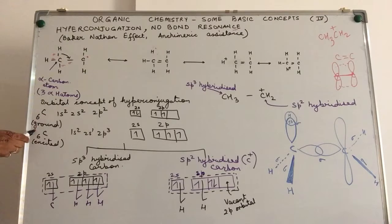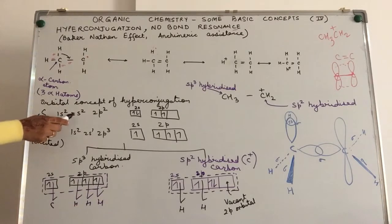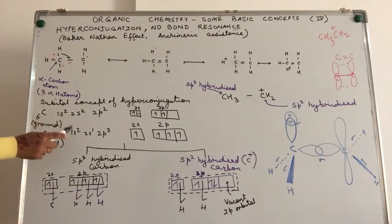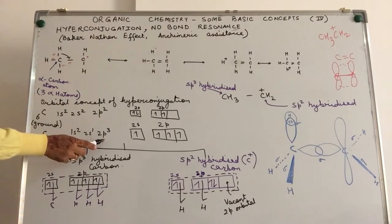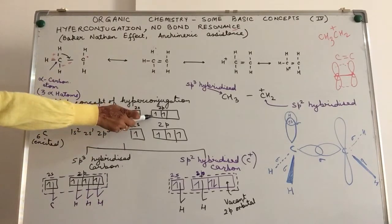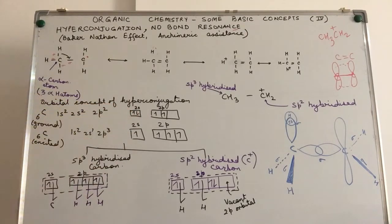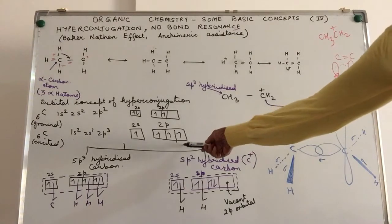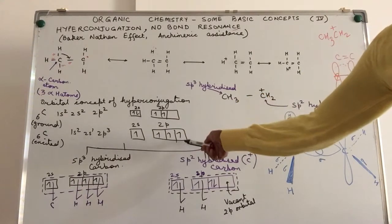In order to explain hyperconjugation in terms of orbital effects: carbon, atomic number 6, has ground state electronic configuration 1s2, 2s2, 2p2. In the excited state it is 1s2, 2s1, 2p3. Written in orbital structures: 2s2 and 2p2 — by Hund's rule, electrons first occupy orbitals singly before pairing. Again, the excited state is 2s1, 2p3.